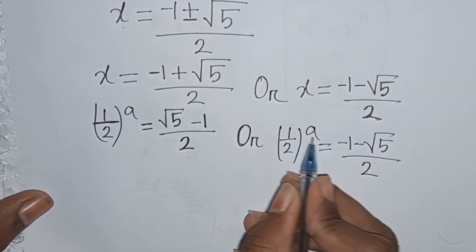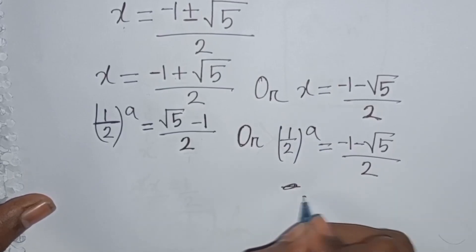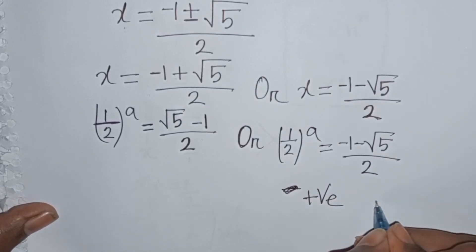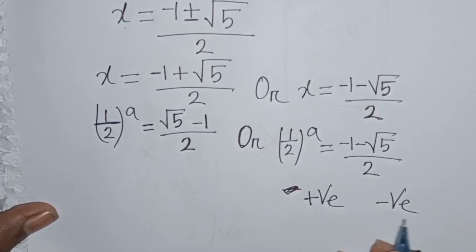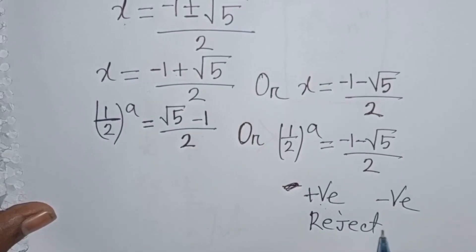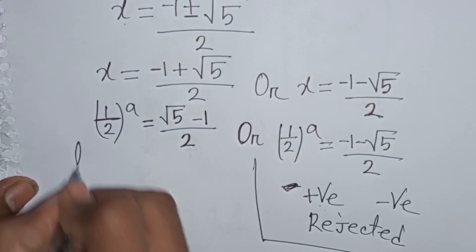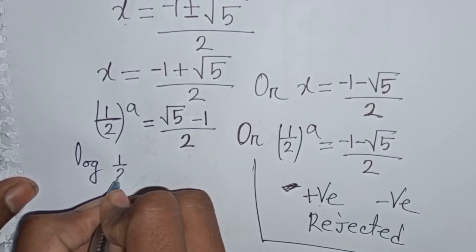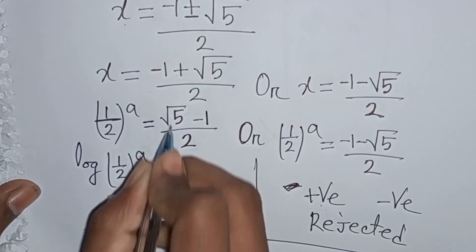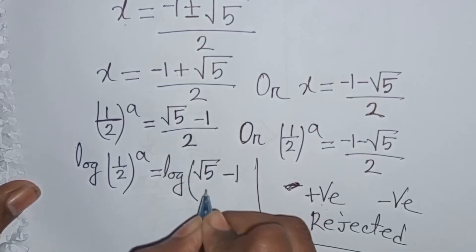We note that (1/2)^a raised to any power is always positive, but (minus 1 minus square root of 5) divided by 2 is negative. Positive cannot equal negative, so this solution is rejected. From the valid solution, we apply log to both sides: log of (1/2)^a equals log of (square root of 5 minus 1) divided by 2.